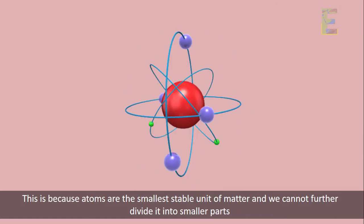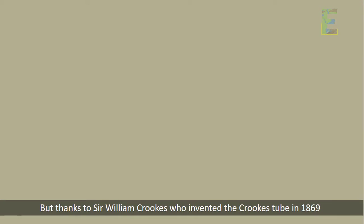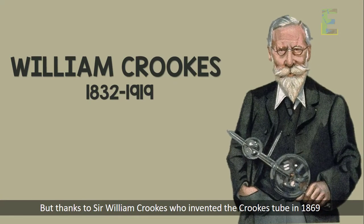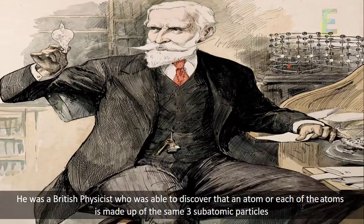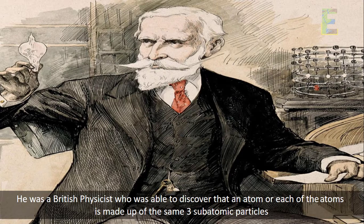But thanks to Sir William Crookes, who invented the Crookes tube in 1869, he was a British physicist who was able to discover that an atom or each of the atoms is made up of the same three subatomic particles.